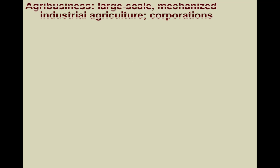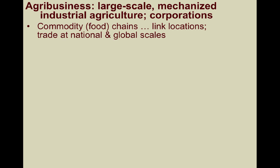Agribusiness refers to large-scale corporations involved in modern mechanized industrial agriculture. They are engaged in a massive variety of goods and services within the agriculture industry. They create and work with commodity chains that link several locations of production and distribution of goods or commodities that are traded at the national and global scales.